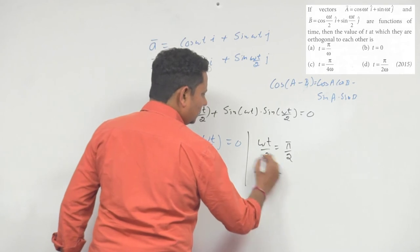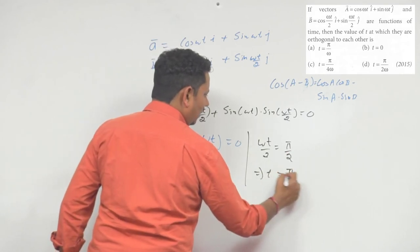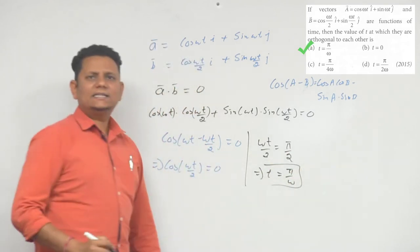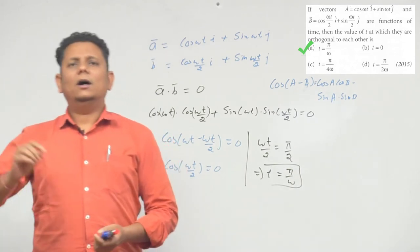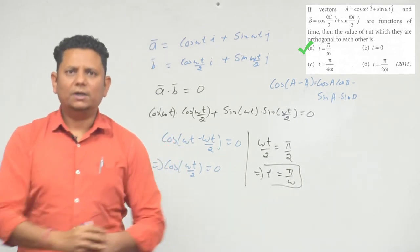Which implies t is equal to pi by omega. Based on this हमें कह सकते हैं कि अपना option number a would be the correct answer for this particular problem.